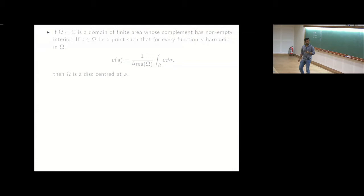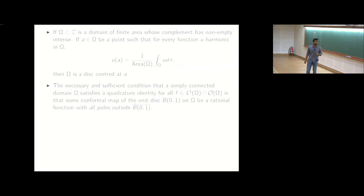So if U of A is one by area of omega times integral of U D sigma, then omega is a disk centered at A. Shapiro later characterized all simply connected quadrature domains in the plane and we now know that they are basically the image of the unit disk under rational maps which are univalent on the unit disk and whose poles are away from U bar or B01 bar, disk bar.